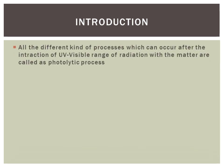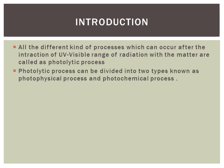According to the introductory part, all the different kinds of processes which can occur after the interaction of UV-visible range of radiation with matter are called photolytic processes. Photolytic processes can be divided into two types: photo physical processes and photochemical processes. Photo physical processes are those photolytic processes which do not involve a chemical reaction, or which involve the phase transformation of matter, like solid to liquid or liquid to gaseous state.